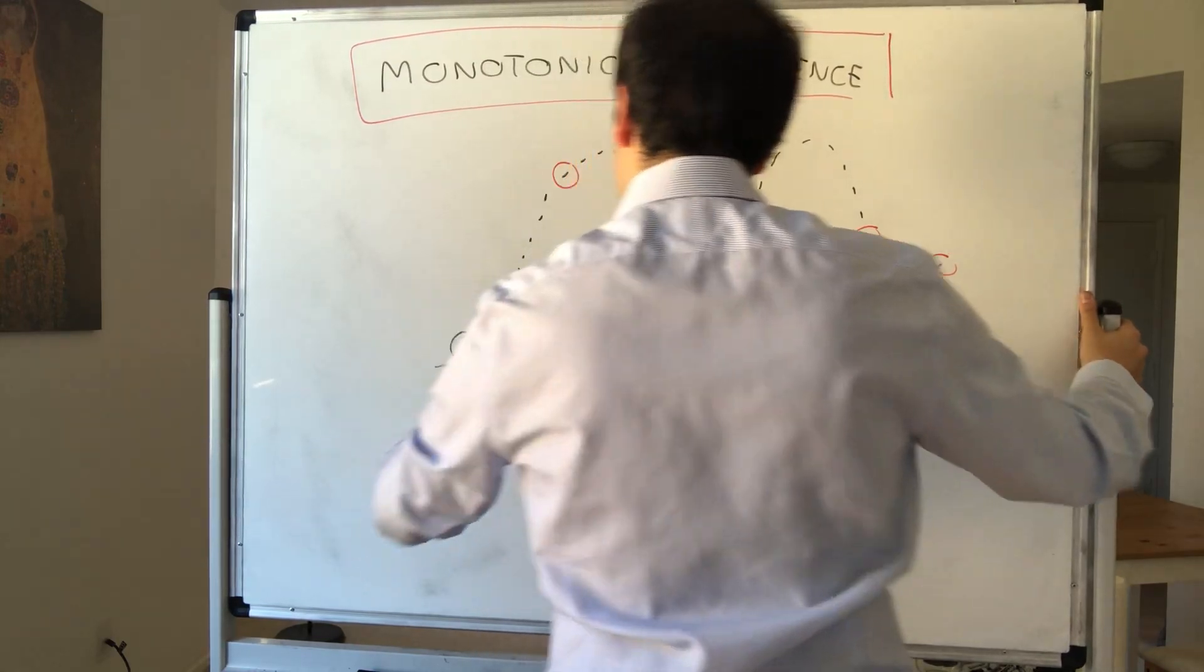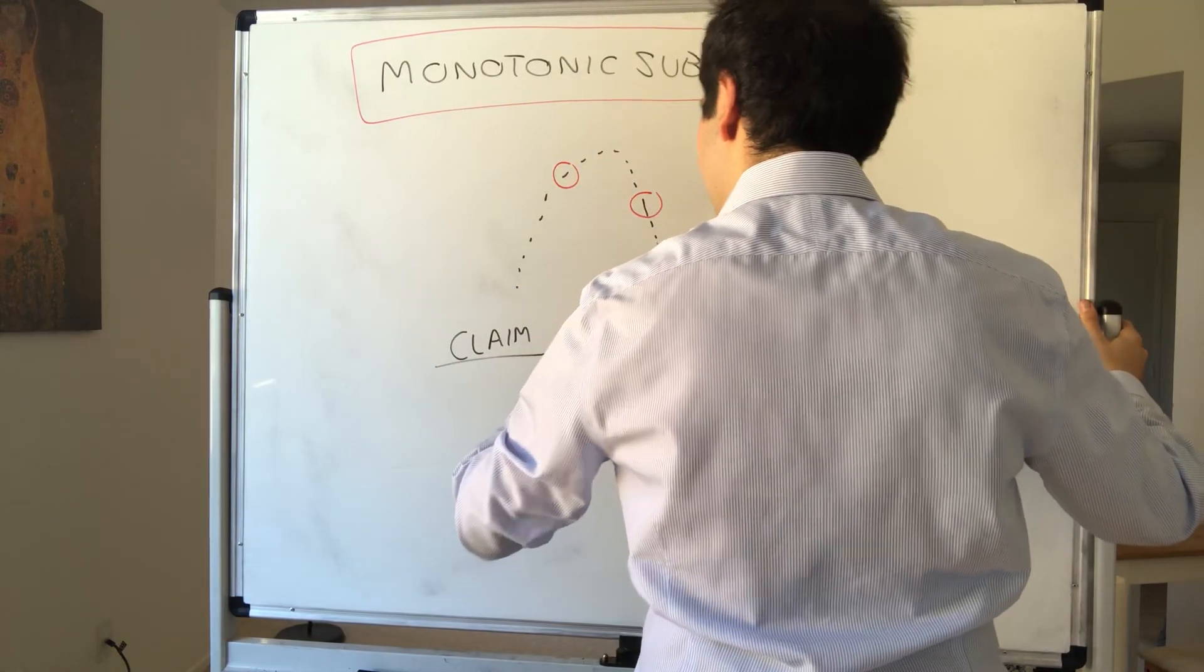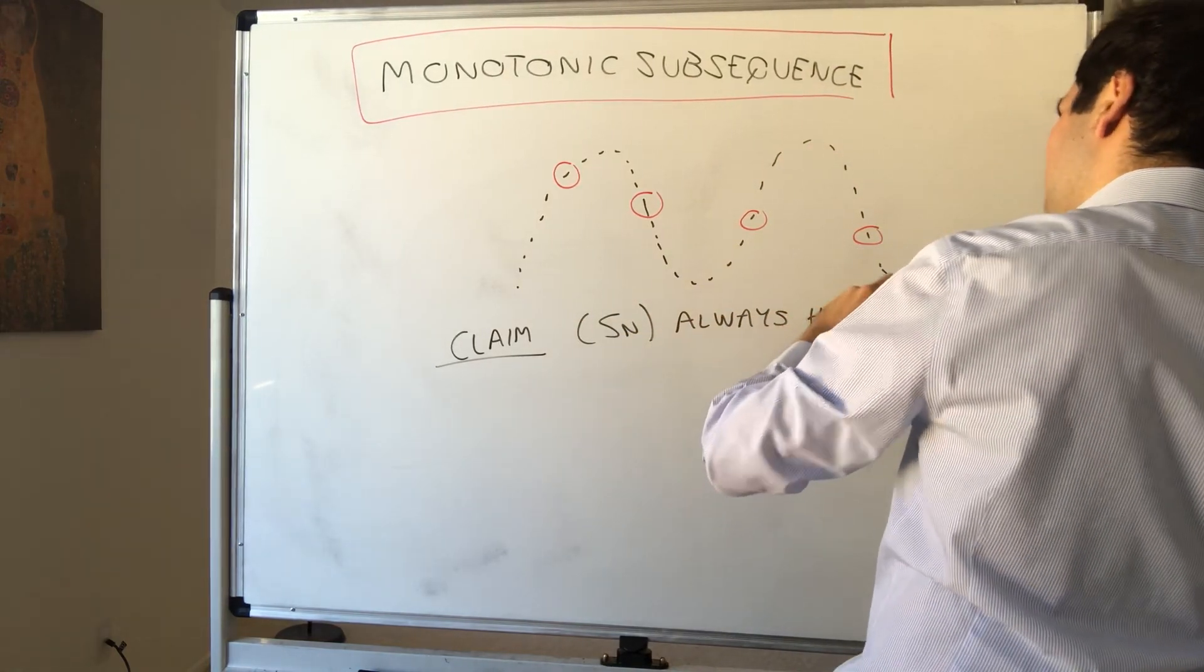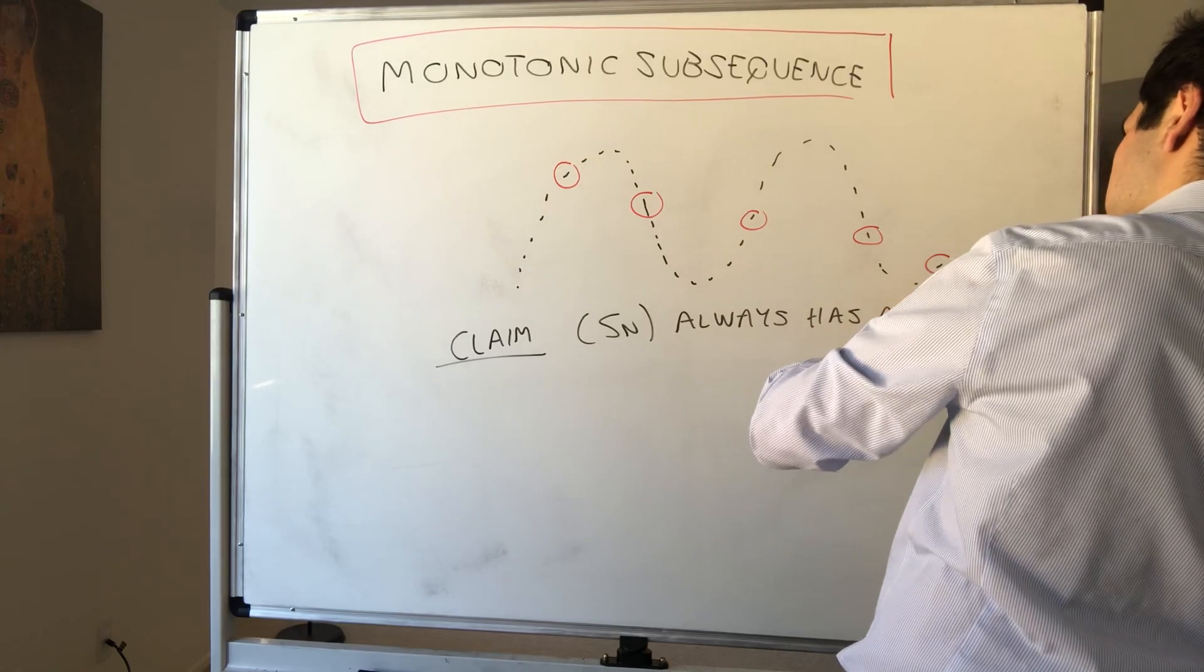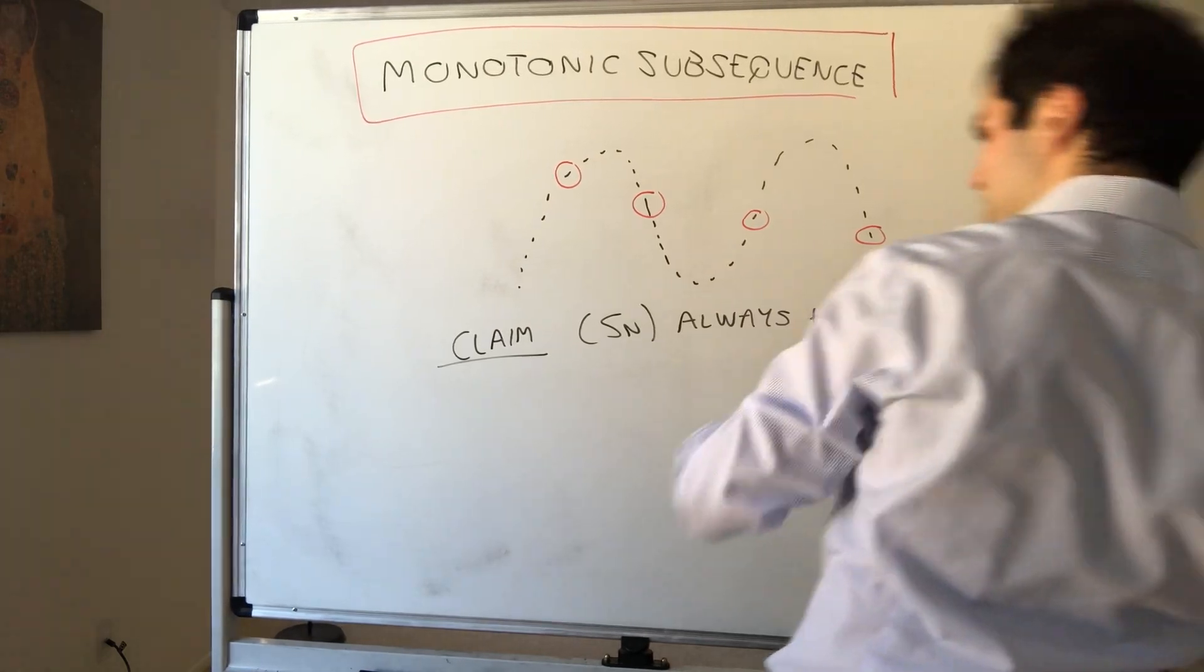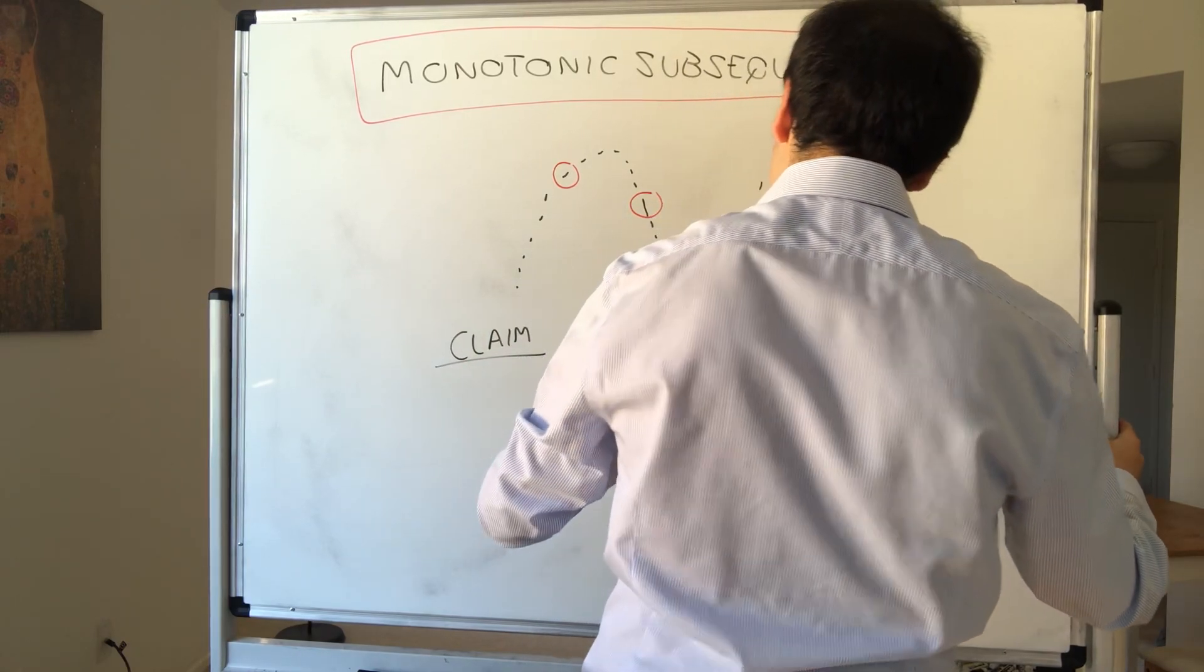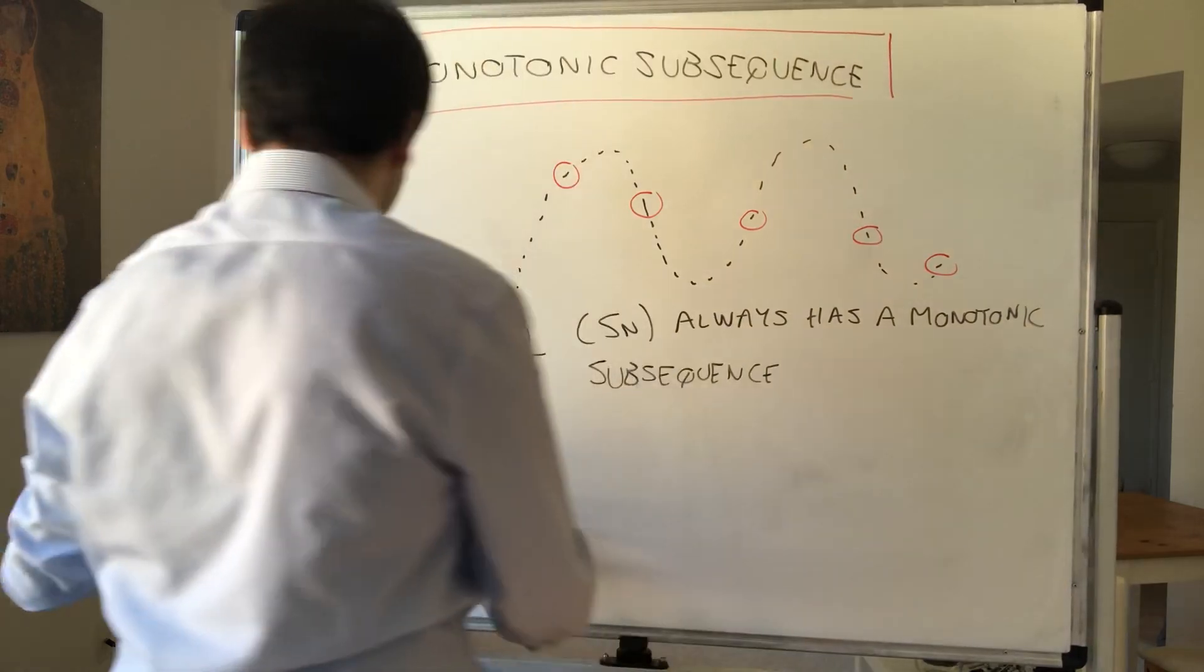So, claim: Sn always has a monotonic subsequence. Monotonic, remember, means non-increasing or non-decreasing.